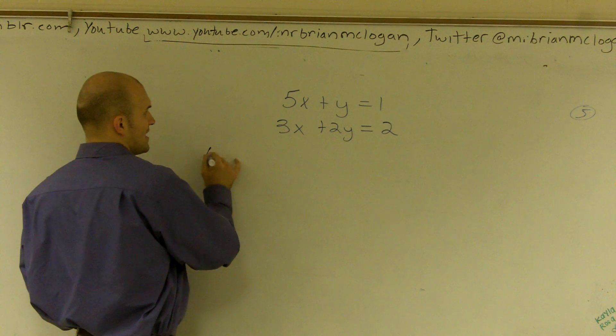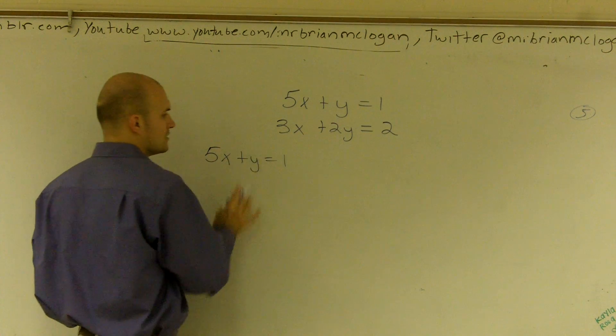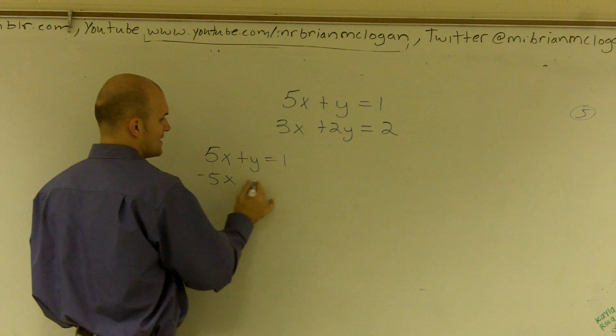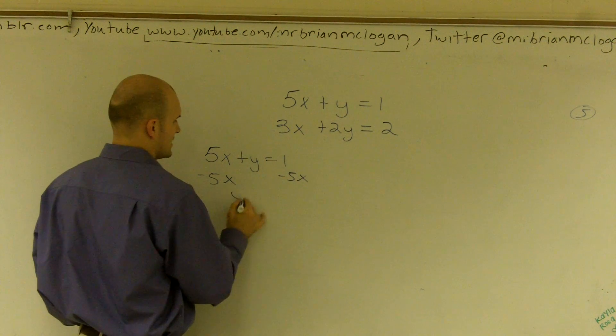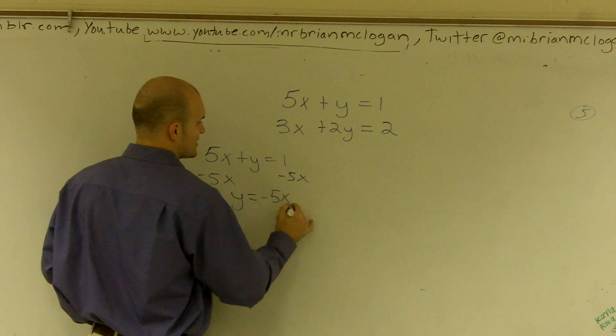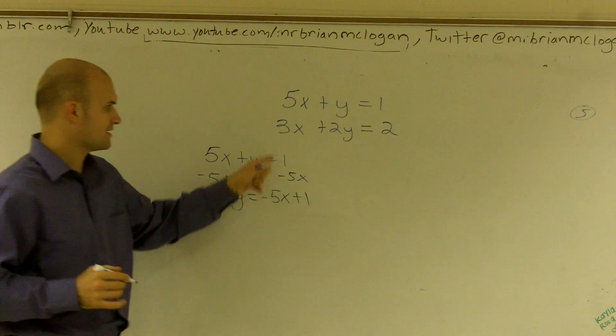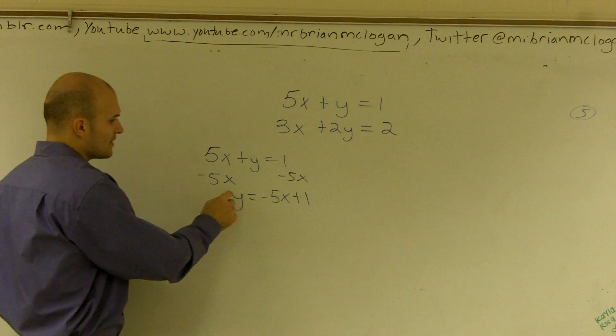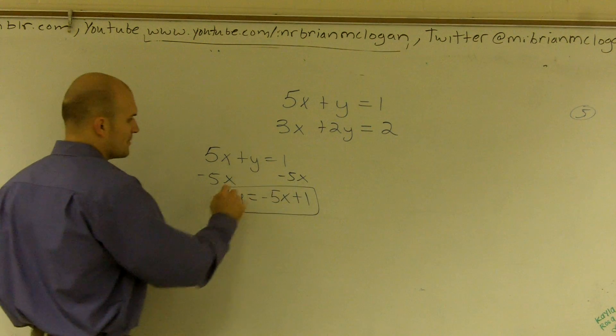So I have 5x plus y equals 1. To solve for y, I subtract the 5x, and I get y equals negative 5x plus 1. OK? I just wrote the negative 5x in front of the 1. So now what I've done is I have solved for one of my variables.